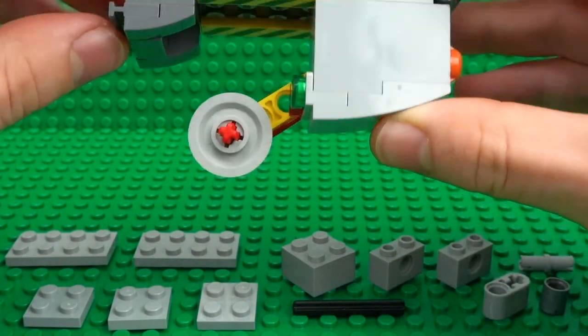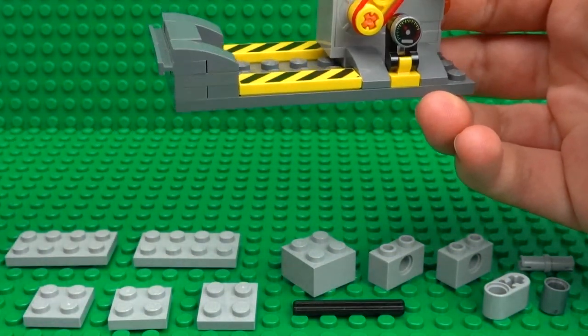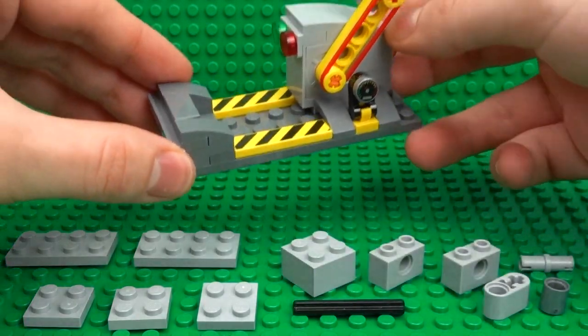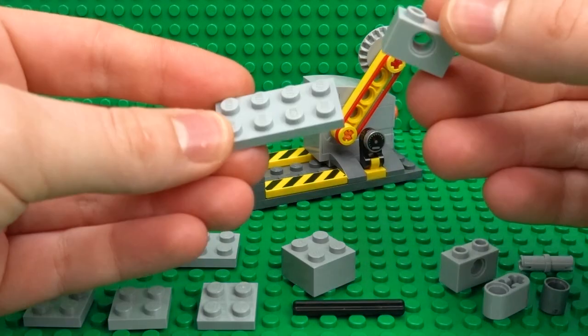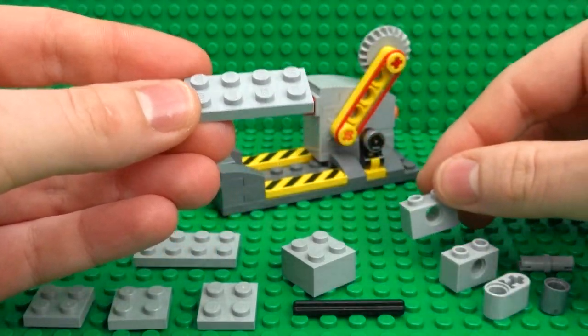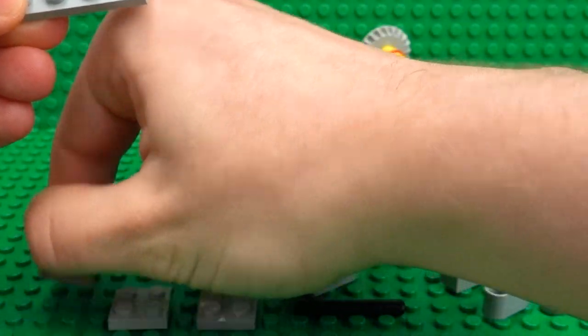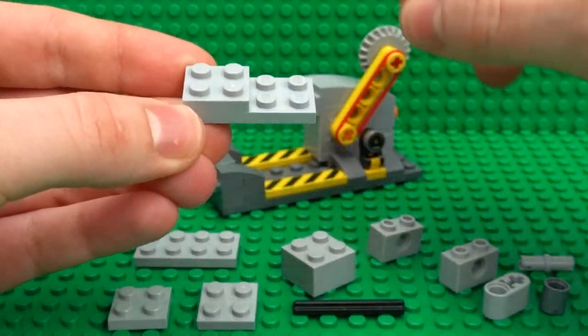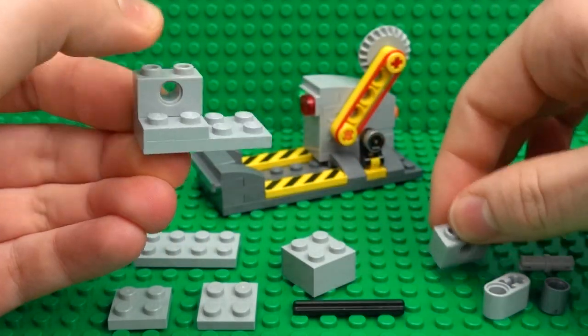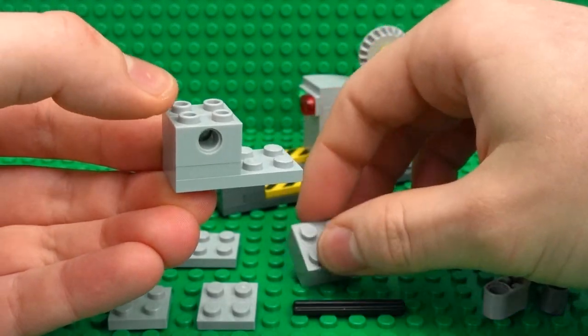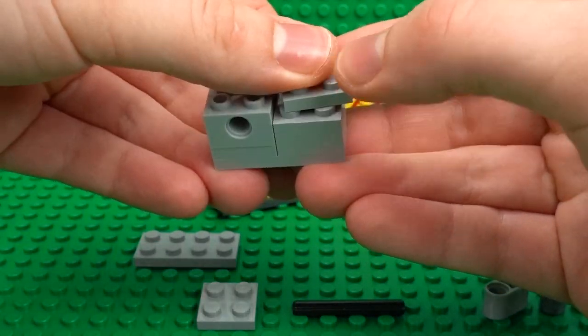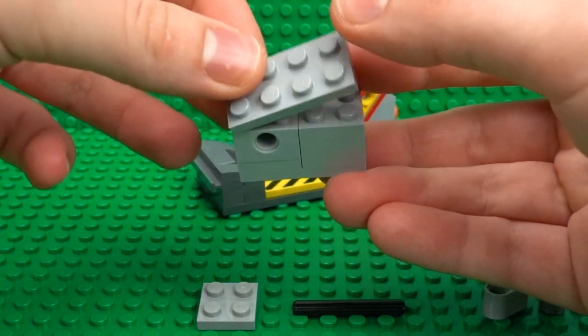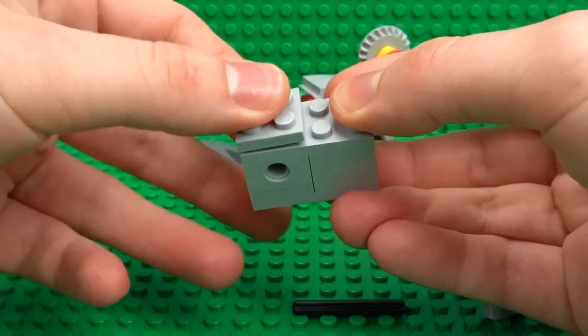And before I explain how it works let's build up the alternative option. So this will use a 2x4 plate and a 2x2 plate as well as two 1x2 technic bricks on this side, a regular 2x2 brick on the end, then another 2x2 plate, 2x4 plate and a 2x2 to finish that off.